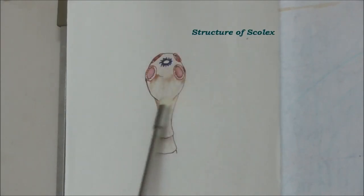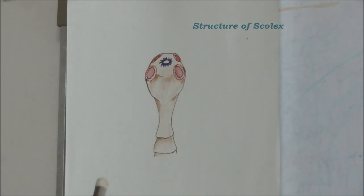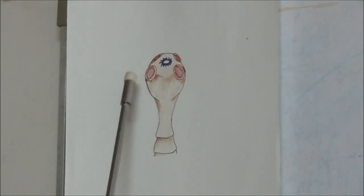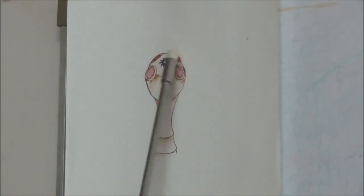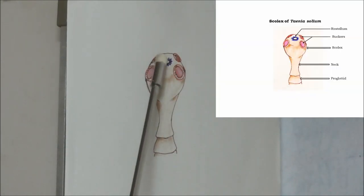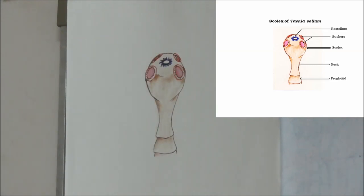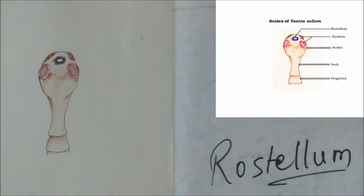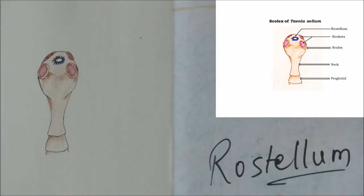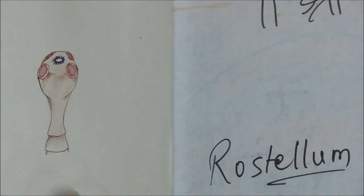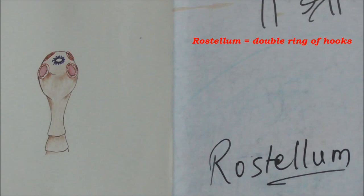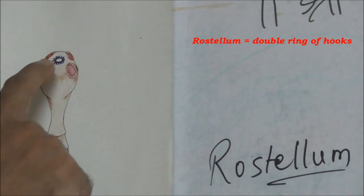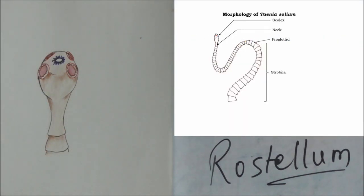The scolex has four suckers on four sides, and right at the tip there is something called a rostellum. The rostellum is actually a double ring of tiny hooks. It is with the help of these hooks and the suckers that the worm holds to the intestinal wall.